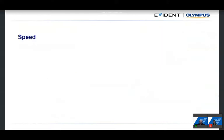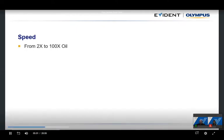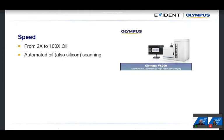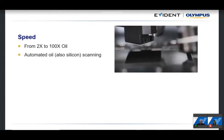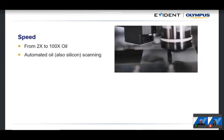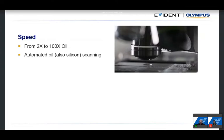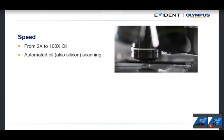Speaking of speed: the system uses standard objectives with six positions, and in each position you can mount any objective from 2x up to 100x oil magnification. This means you can always find the best compromise between detail and scan speed. For 100x oil, we have automated oil management — the system calculates the necessary quantity of oil and drops it automatically onto the slide so oil scanning starts fully automated.